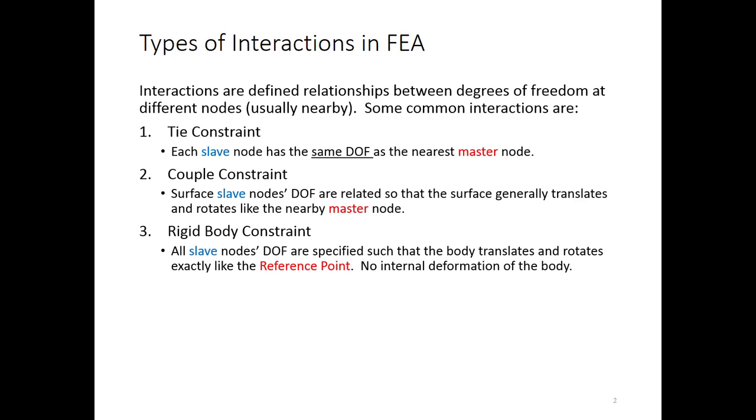A rigid body constraint is sort of like a more rigid, a more fixed version of a tie constraint. You have a whole bunch of slave nodes that are linked to a single reference point. And there's no internal deformation between the slave nodes. So that gives you a rigid structure and effectively what you've done is remove a lot of degrees of freedom from your system.